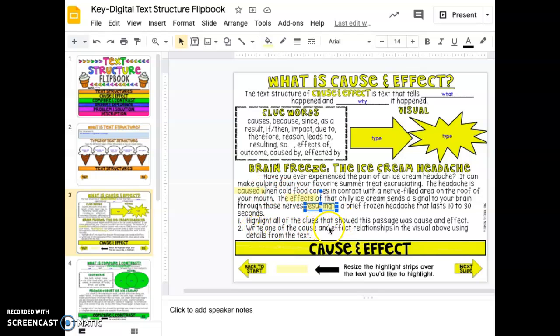Then write one of the causes and one effect relationship above using the details. So here we go. The cause is eating ice cream, and what can eating ice cream cause? It can cause a headache or otherwise known as brain freeze. In this cause and effect text structure, this little paragraph shows cause and effect and explains why.